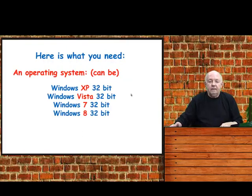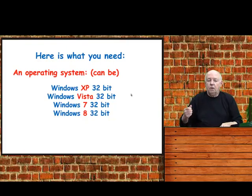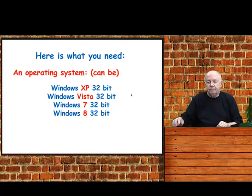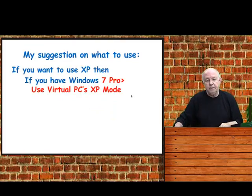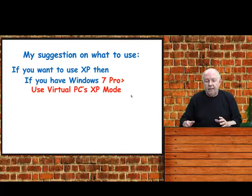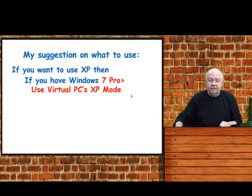Here's what you need to get going. First, you need an operating system, and that operating system can be XP, Vista, Windows 7 or 8, but it does have to be a 32-bit operating system. My suggestion on what to use is easy: if you want to use XP and you have Windows 7 Pro, it comes with software called Virtual PC and it has XP mode on it — you can just use that. I'll show you how to do that in the next video.